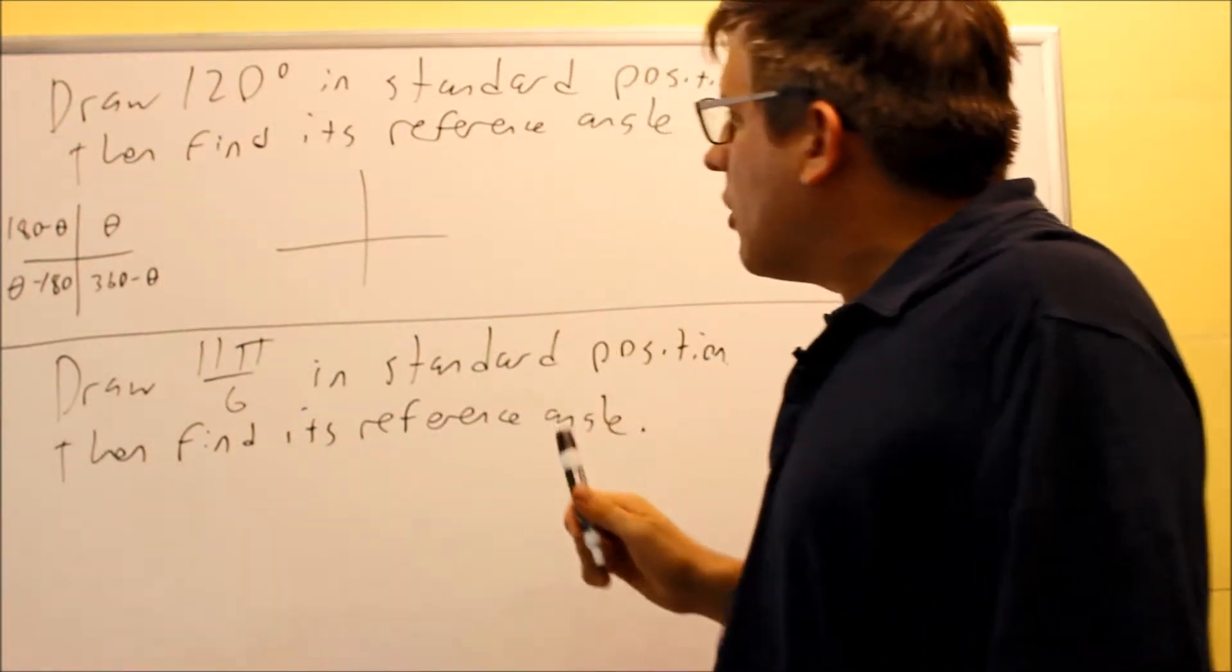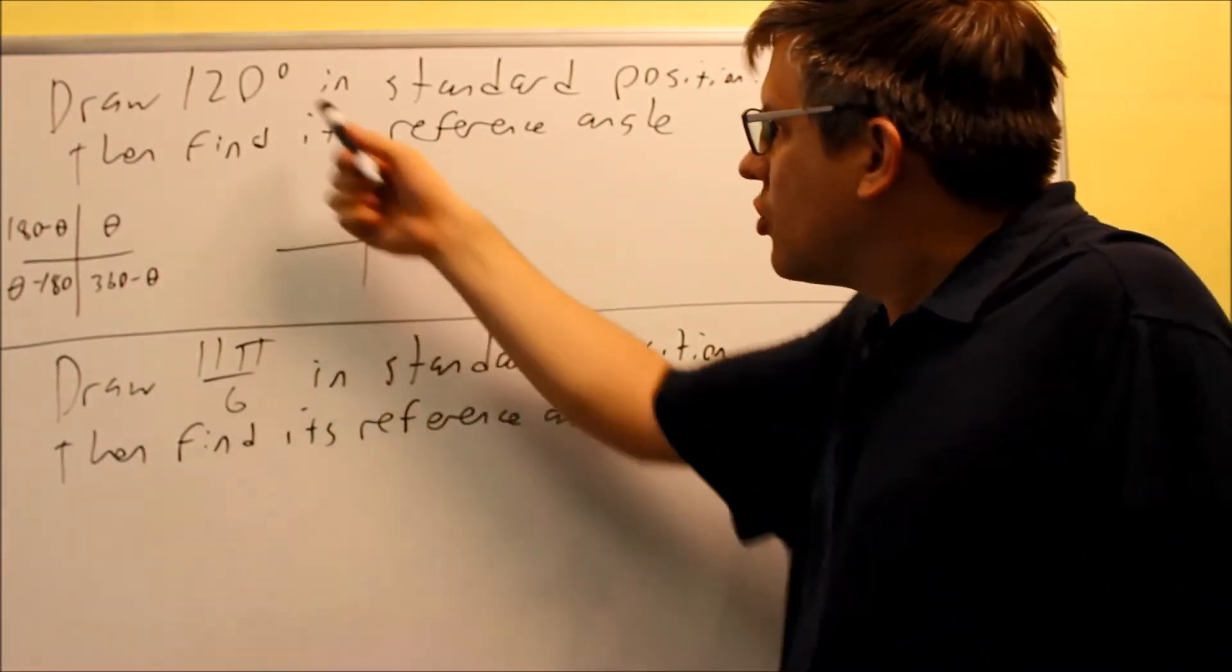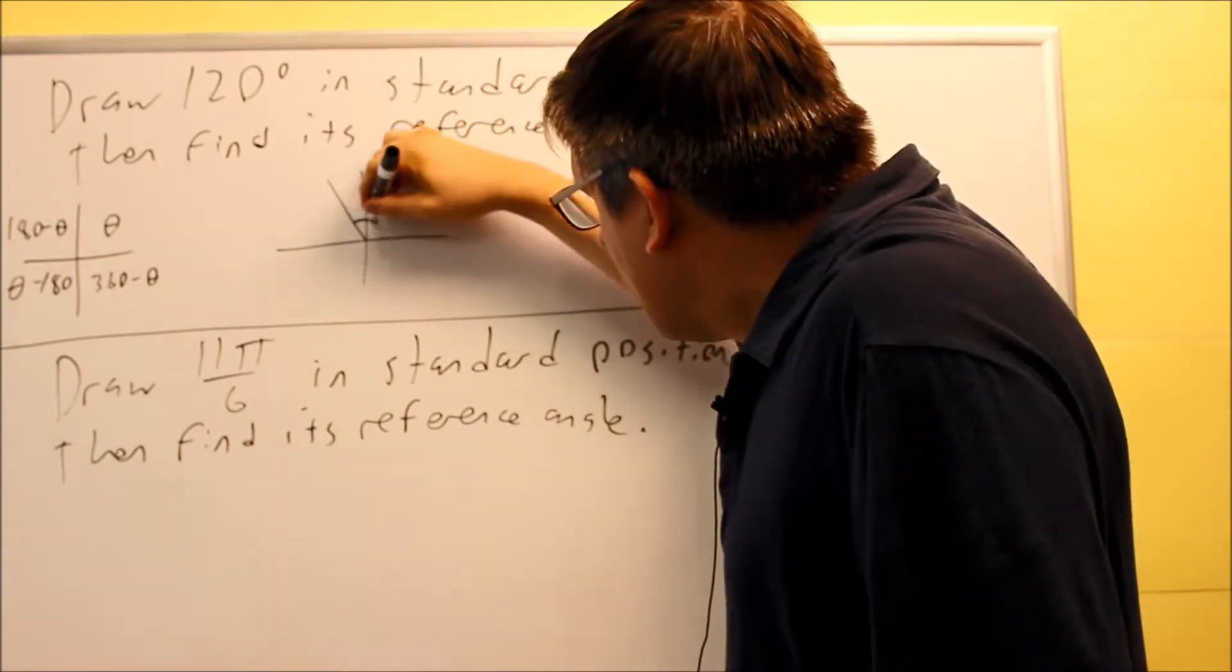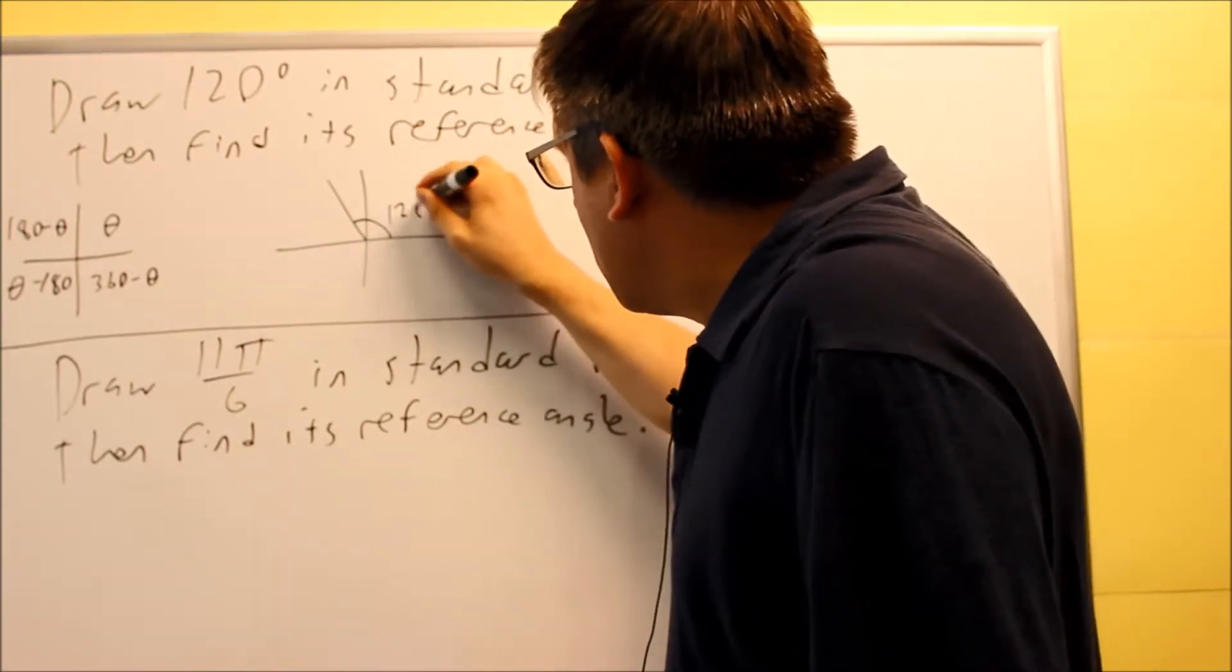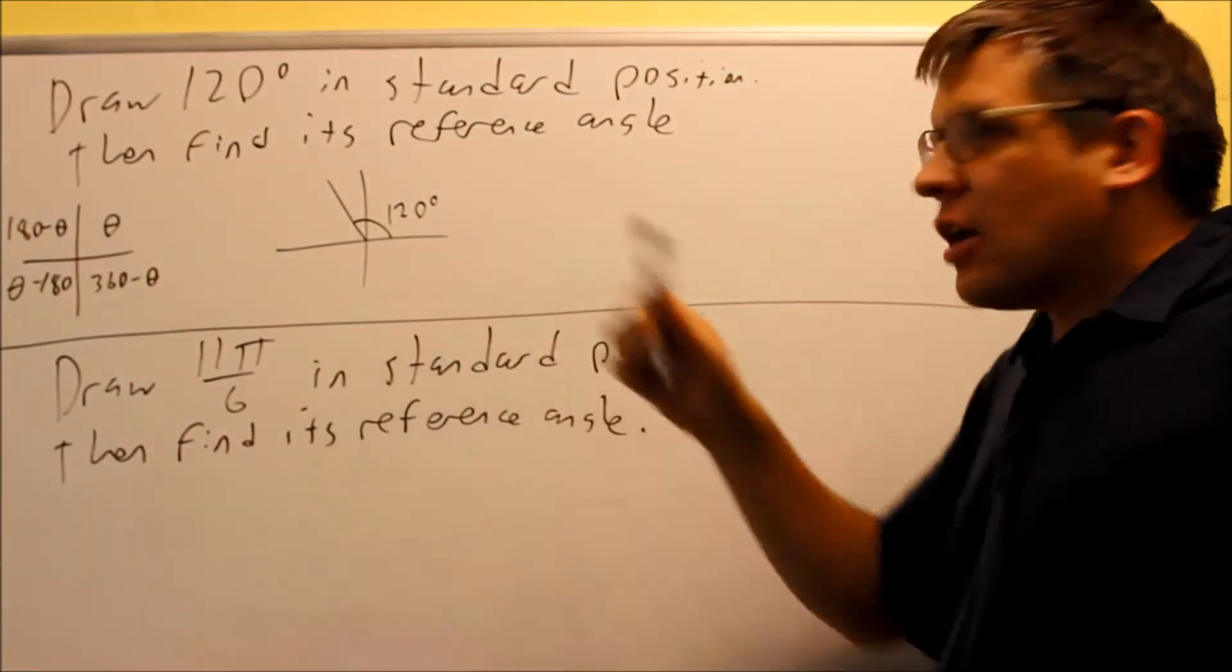Okay, so we know that 120 is between 90 and 180, 120 is closer to the 90, which means that the angle's going to be drawn something like this. So this right here is 120 degrees. It's good to actually do that first.